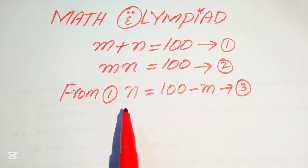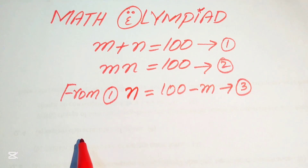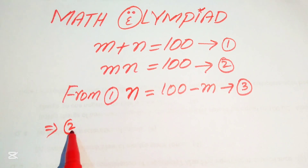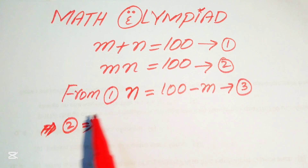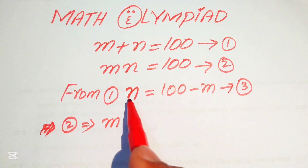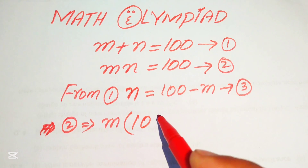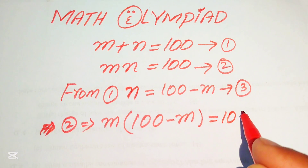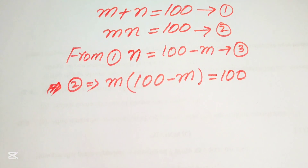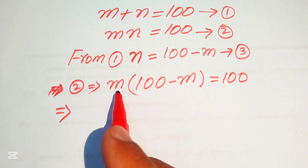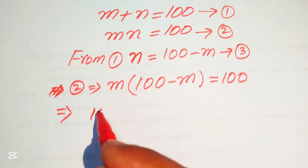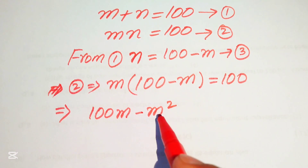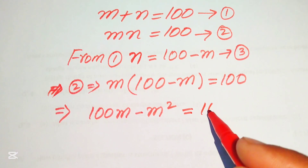We use equation number three in equation number two and we can easily get the values of m and n. So we substitute this value in equation number two: m times n equals m times (100 minus m) equals 100. In the next step we simplify by multiplying m on both terms, giving us 100m minus m squared equals 100.